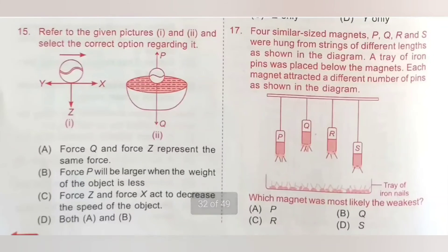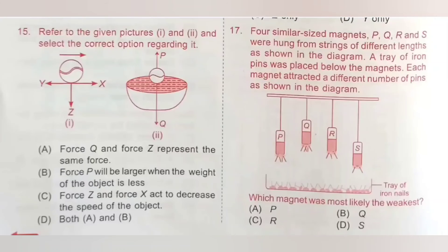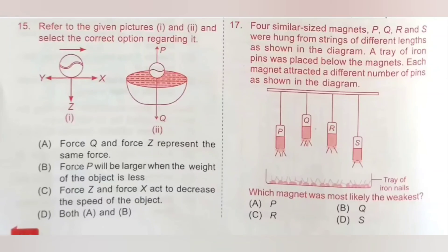Question 17: Four similar-sized magnets P, Q, R, and S were hung from strings of different lengths. A tray of iron pins was placed below the magnets, and each magnet attracted a different number of pins. Which magnet was most likely the weakest? Magnet S, despite being nearest to the iron nails, attracted only two pins. Hence, magnet S is the weakest. Option D — S — is the correct answer.